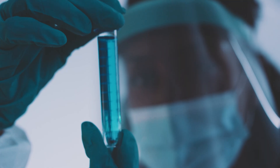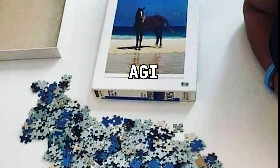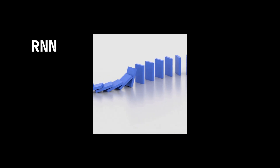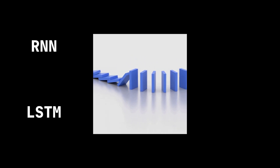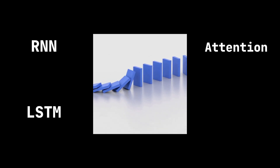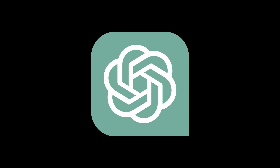Let's summarize: 50 years of research, each solving one piece of the puzzle — not knowing they were building toward AGI. RNNs gave us sequential processing, LSTMs added memory, attention let us look everywhere, transformers made it parallel, and GPT scaled it to ChatGPT.